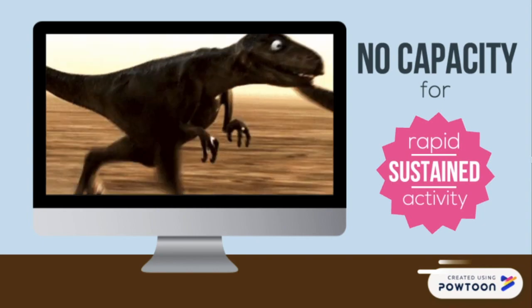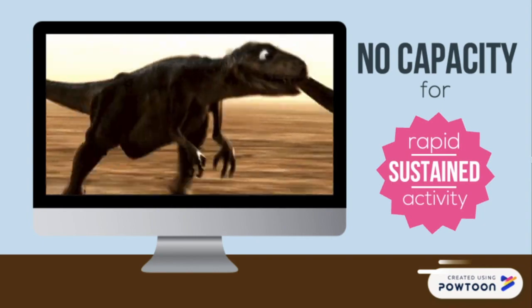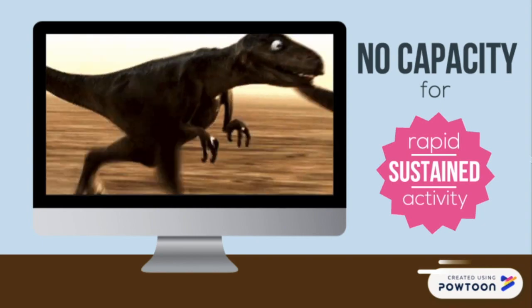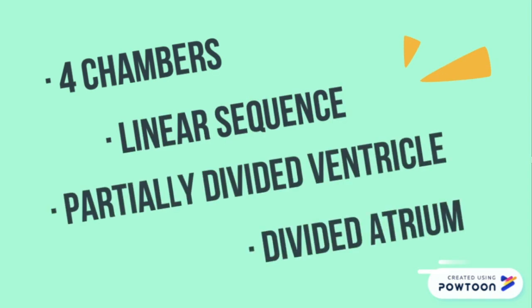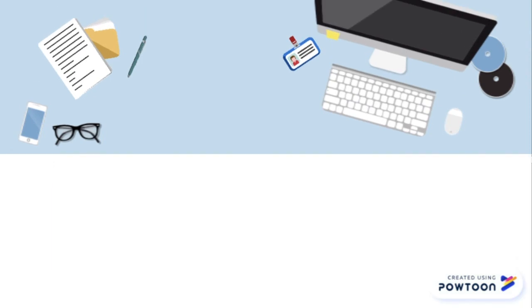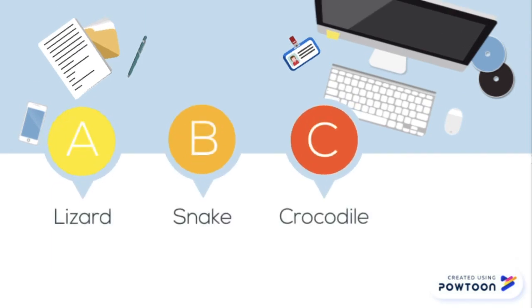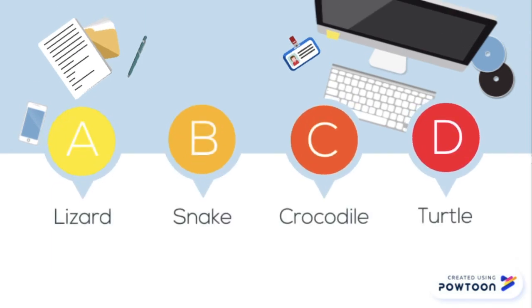Modern reptiles do not have the capacity for rapid sustained activity. All groups of modern reptiles have four chambers arranged in a linear sequence, a completely divided atrium, and a partially divided ventricle. There are four types of reptiles: lizards, snakes, crocodiles, and turtles.